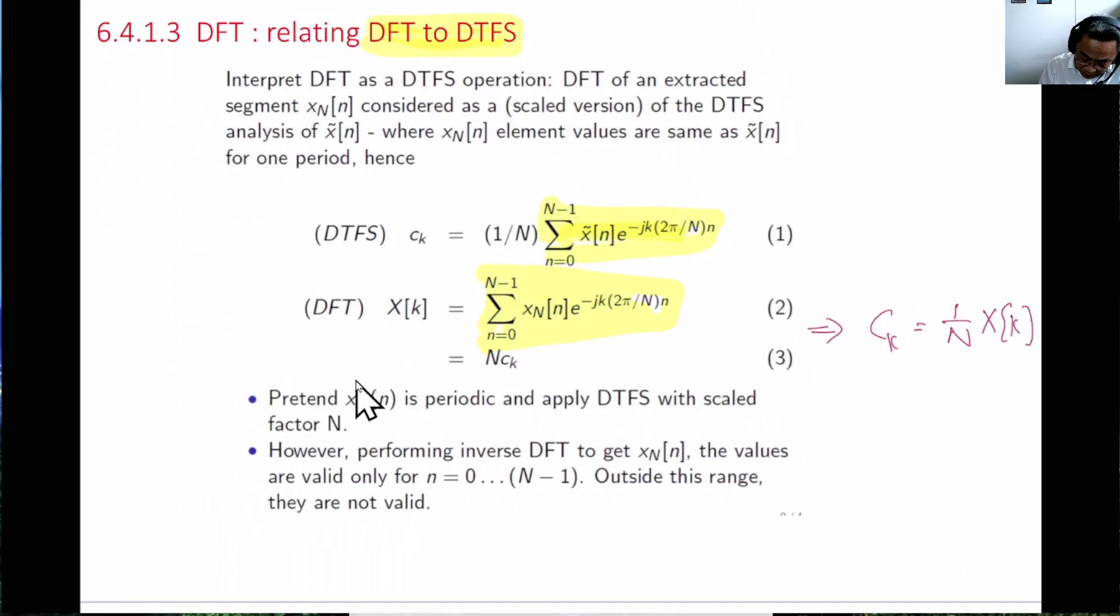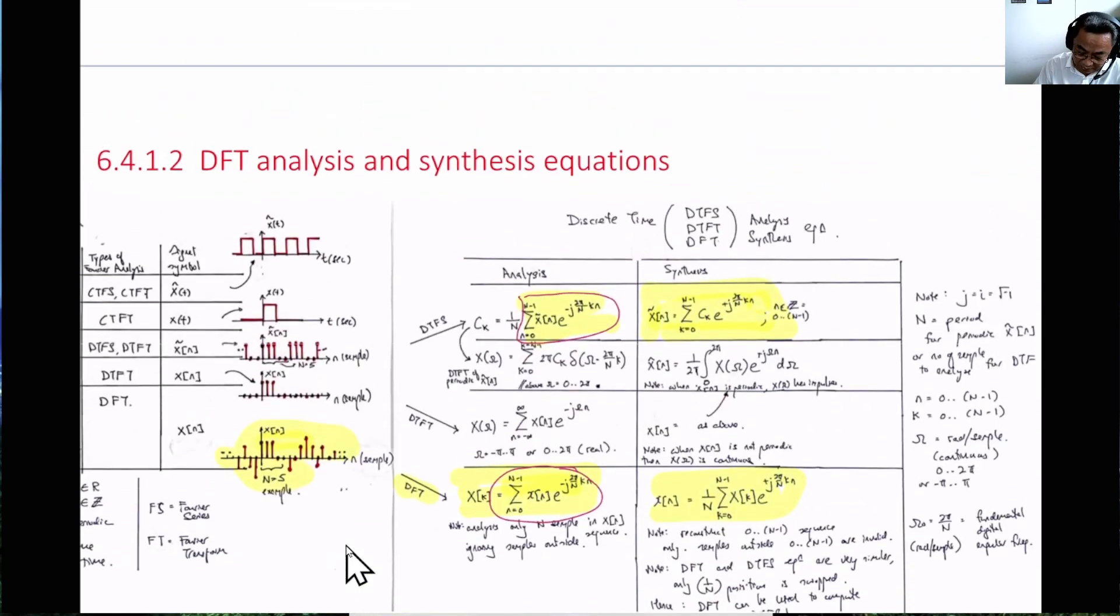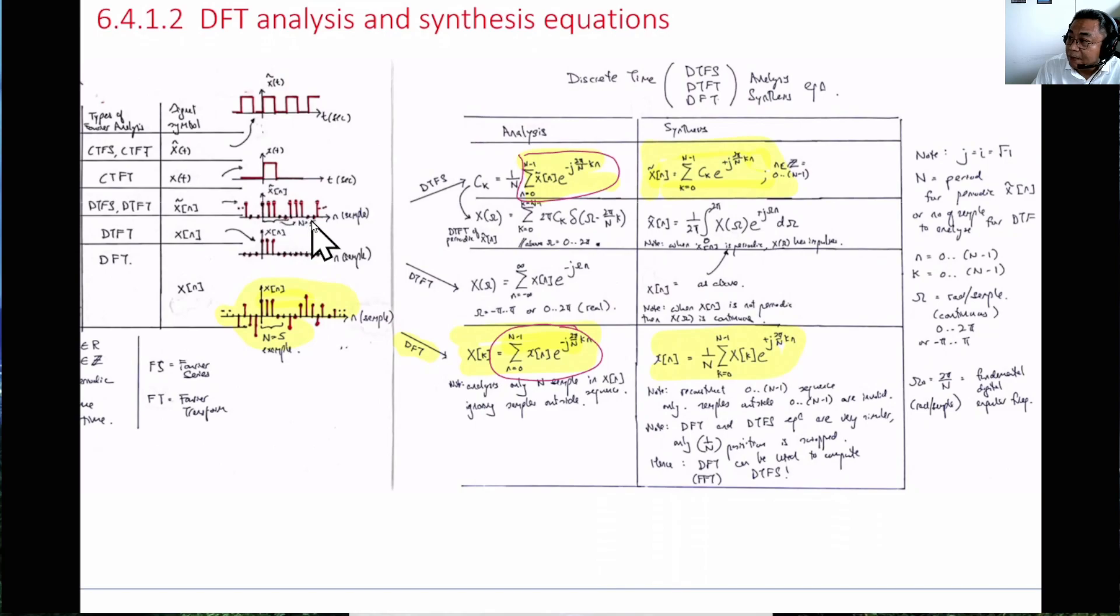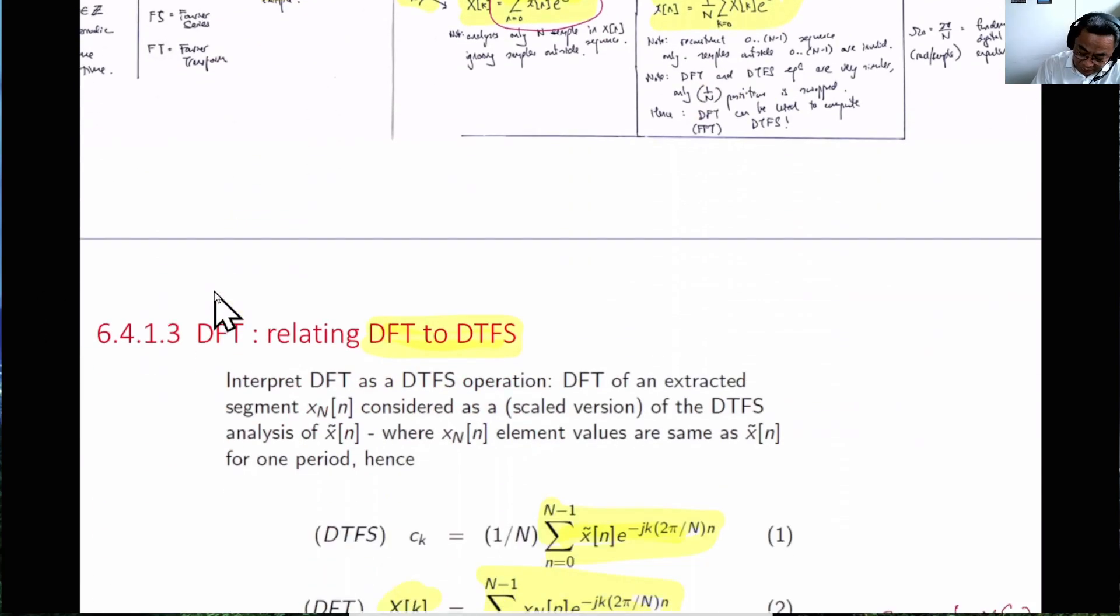When we perform inverse DFT of XK, we'll get XN. But remember that this XN is only valid for the N sample. Outside this range, they are not valid. This is opposite to this. CK is from a periodic signal, the frequency representation of the periodic signal. When we get XN, this is still periodic as in the real data. Here, when we take XK, the frequency representation, and we do inverse DFT, we'll get XN. But only the 5 samples here are correct. Outside here, if you try to use this equation, you'll still be periodic, but they are not representing the real data. This is what this warning is about.